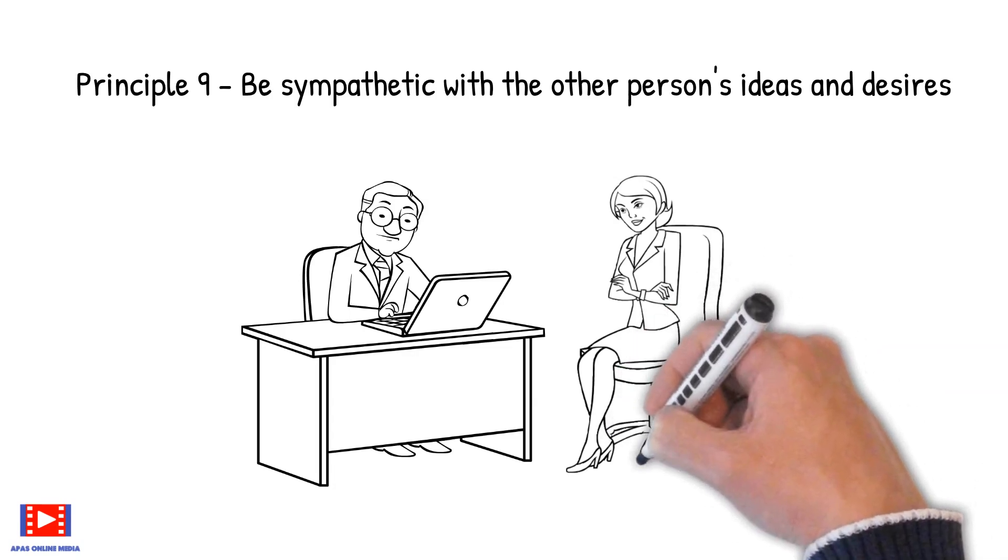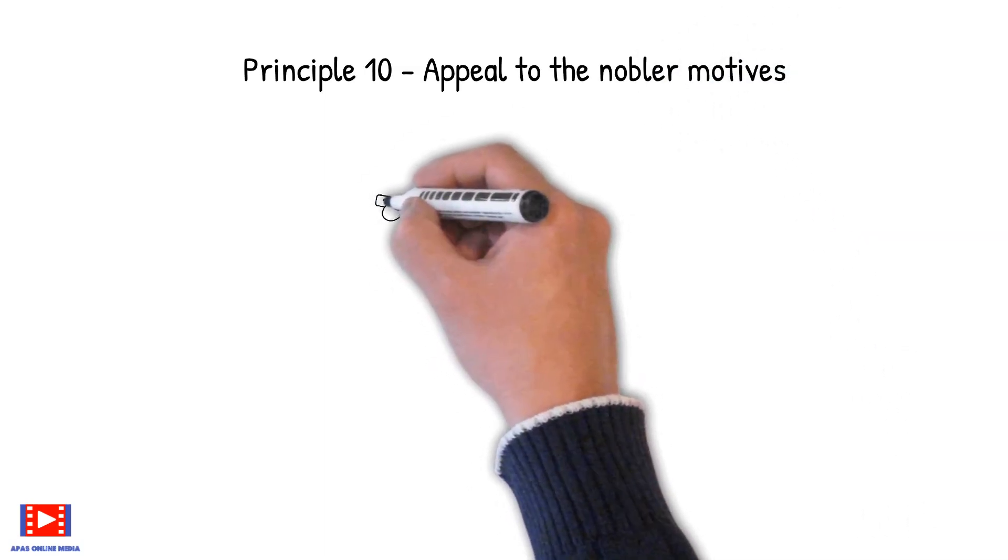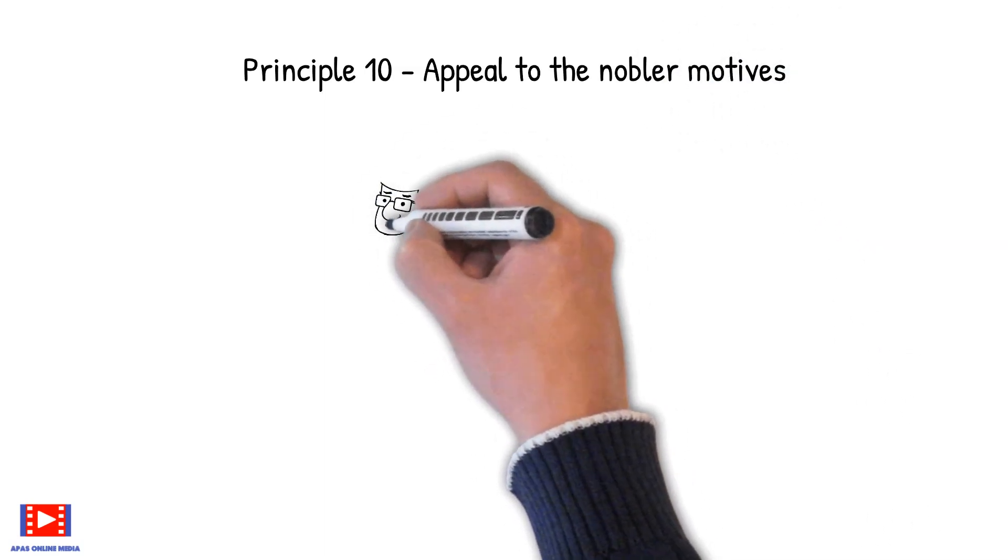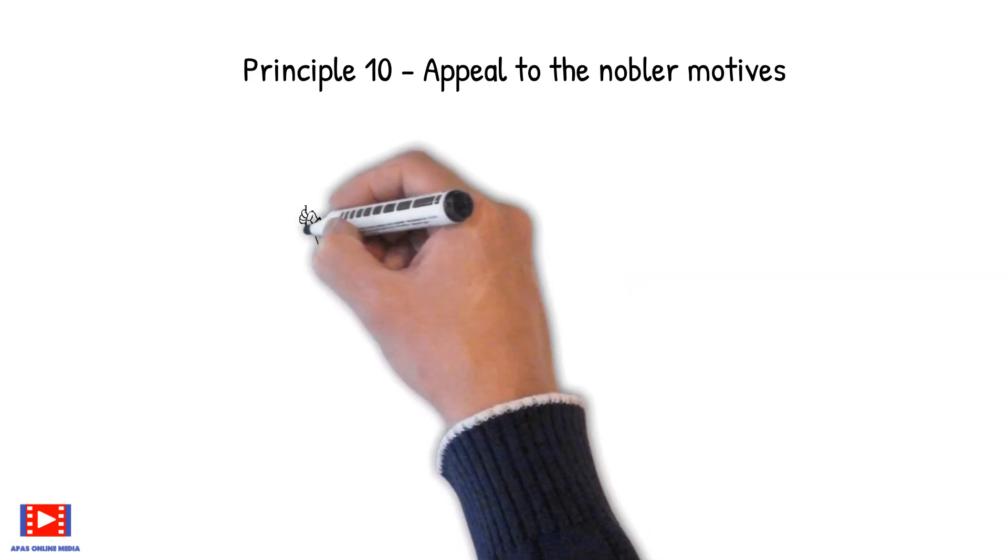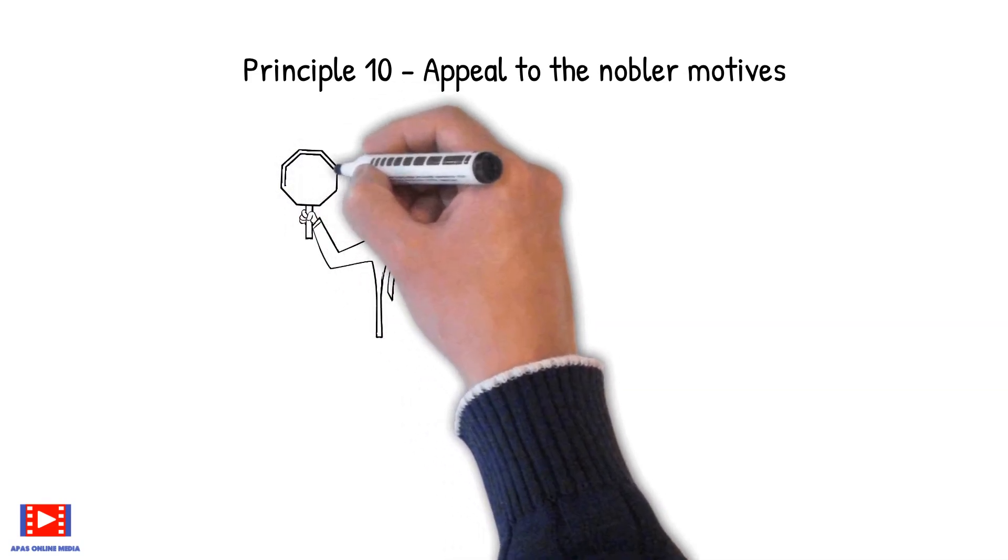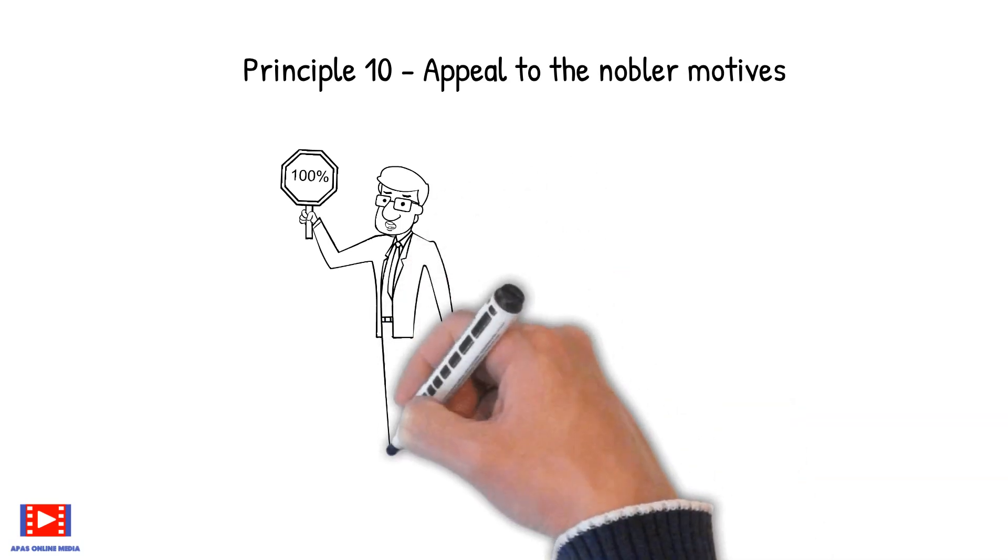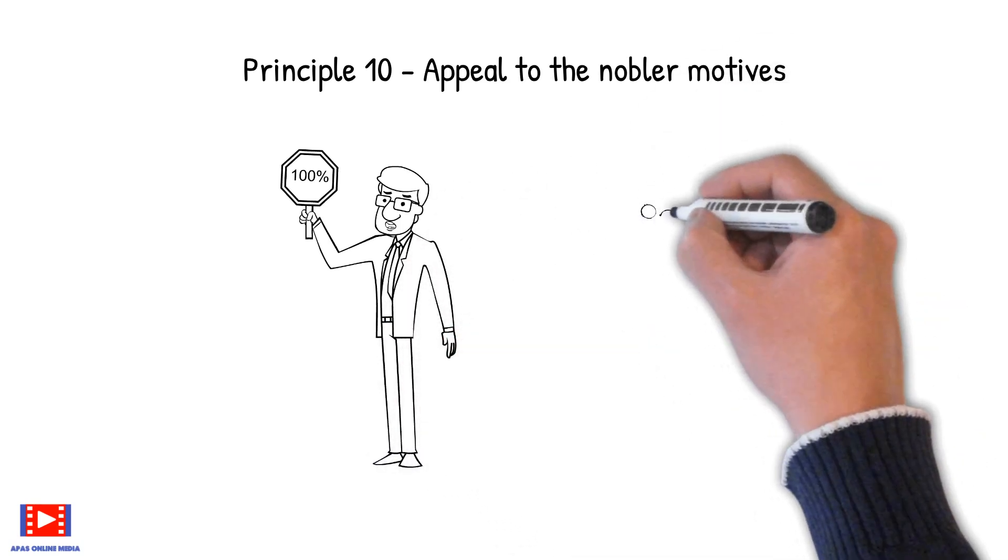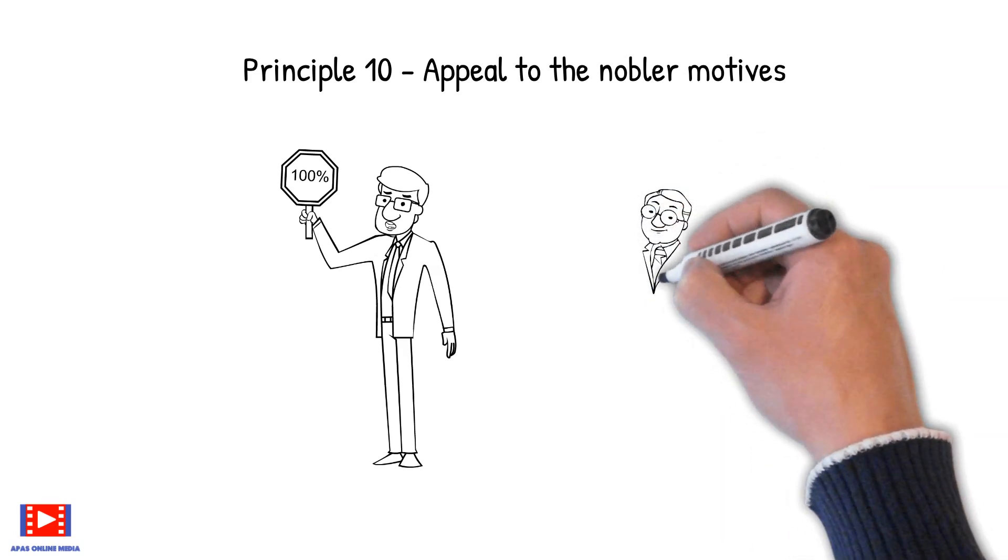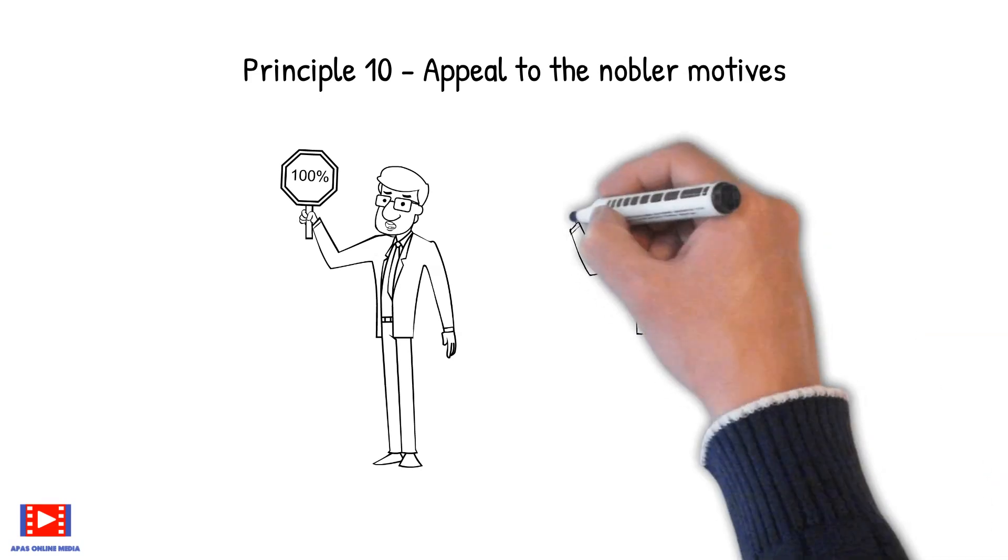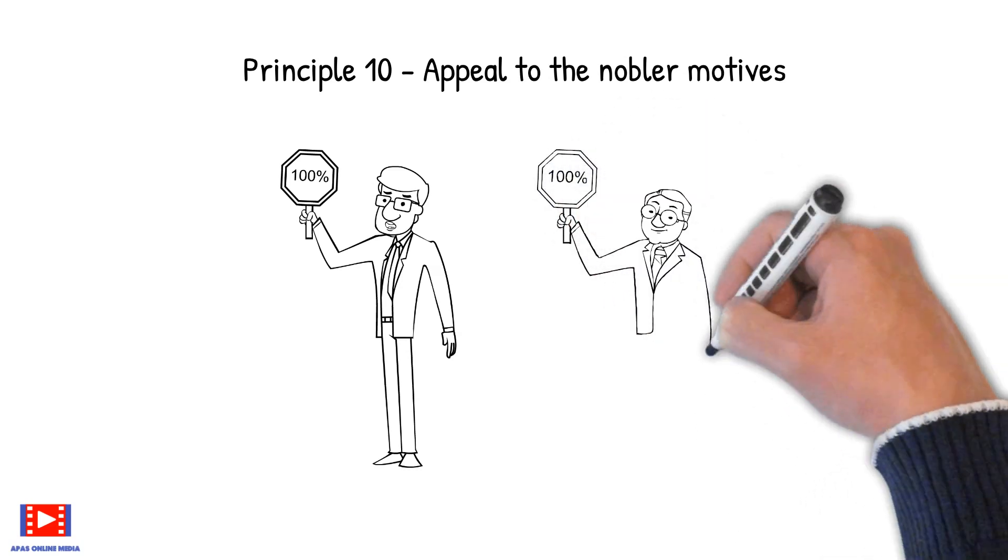Principle 10: Appeal to the nobler motives. We all have disagreements, conflicts and arguments. Just stop yourself in this moment and think, why are you having disagreements or conflict in the first place? Do we really need to continue our arguments, or perhaps find an amicable way to resolve? Think about what you want to achieve by the end of the day. If it is harmony and peace, then those are the nobler motives one should aim for.